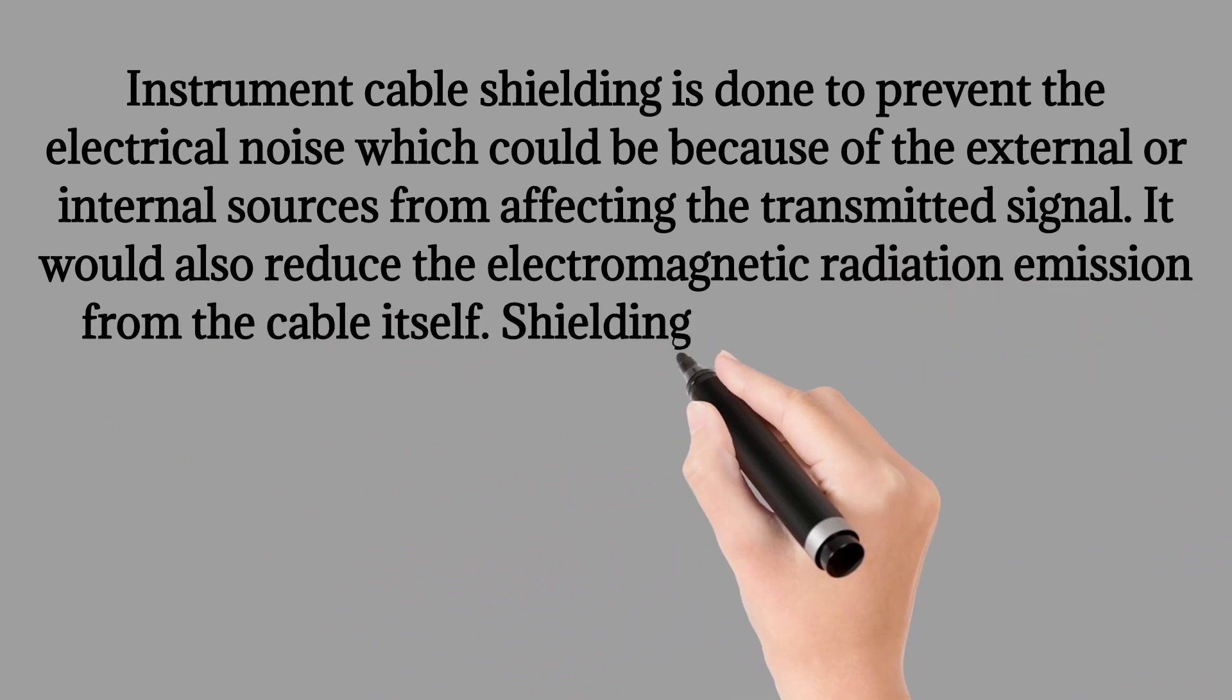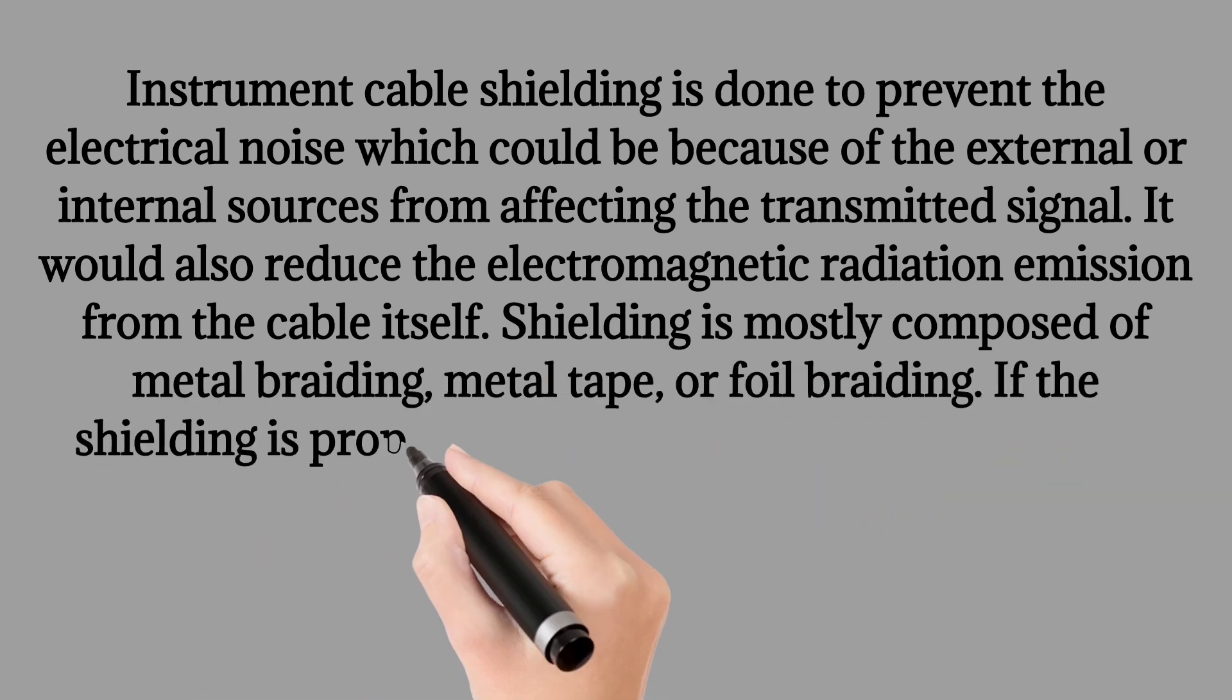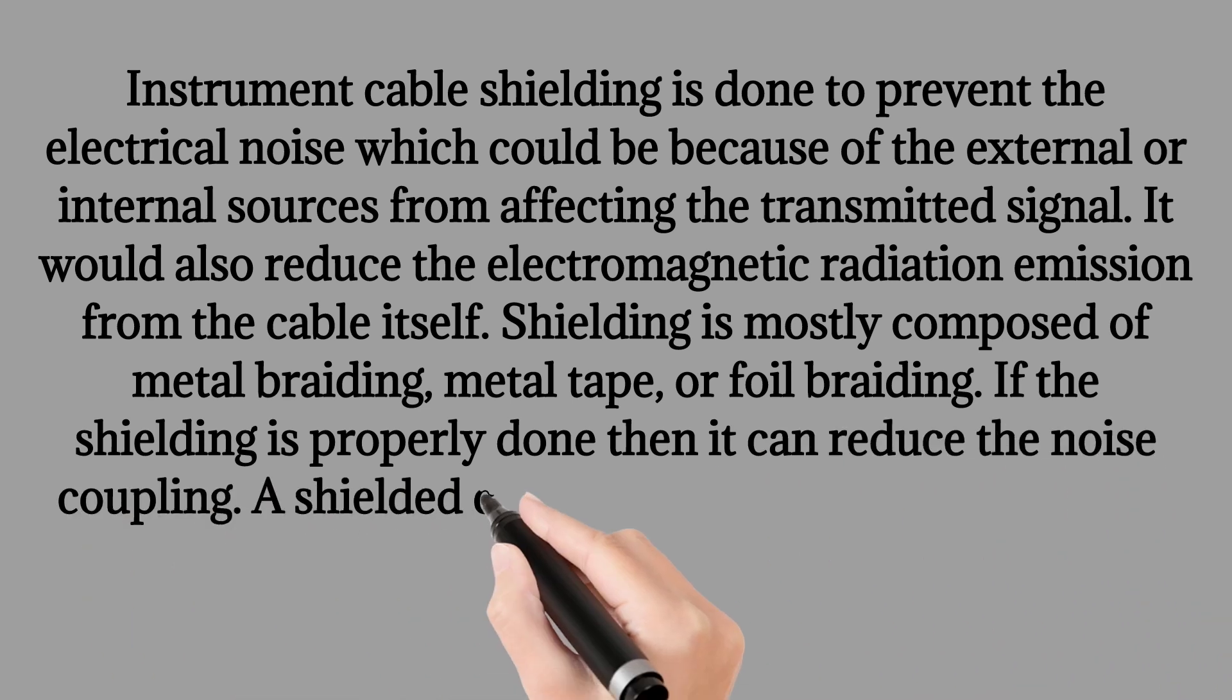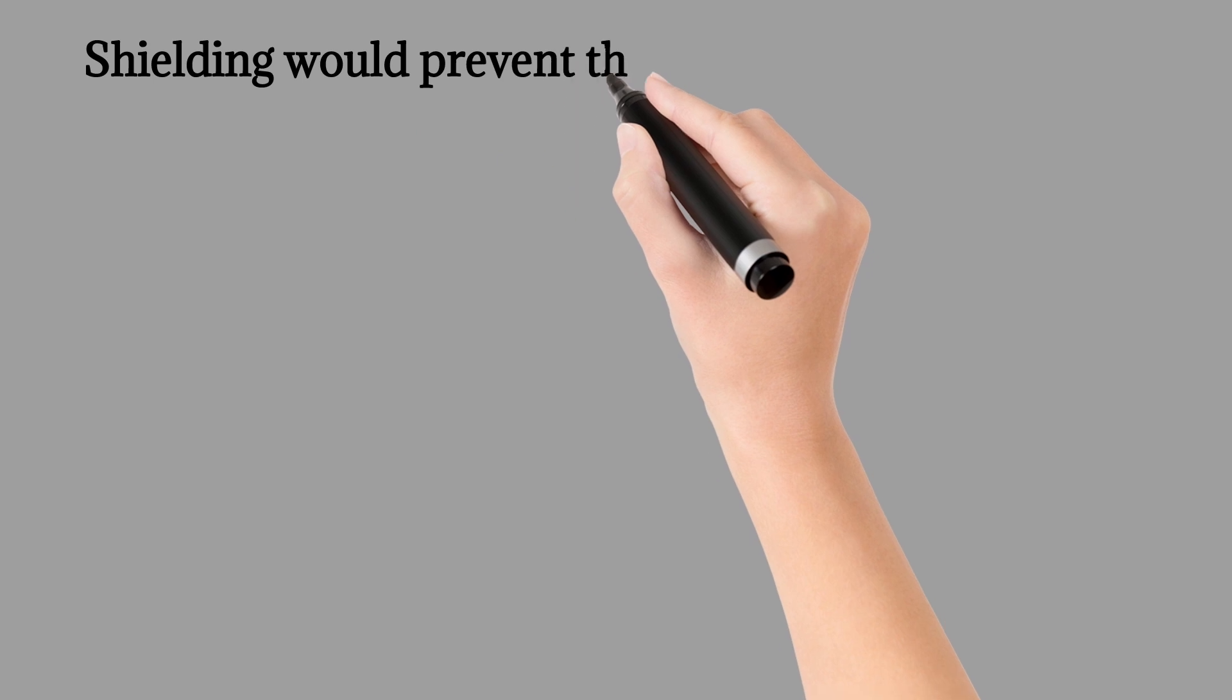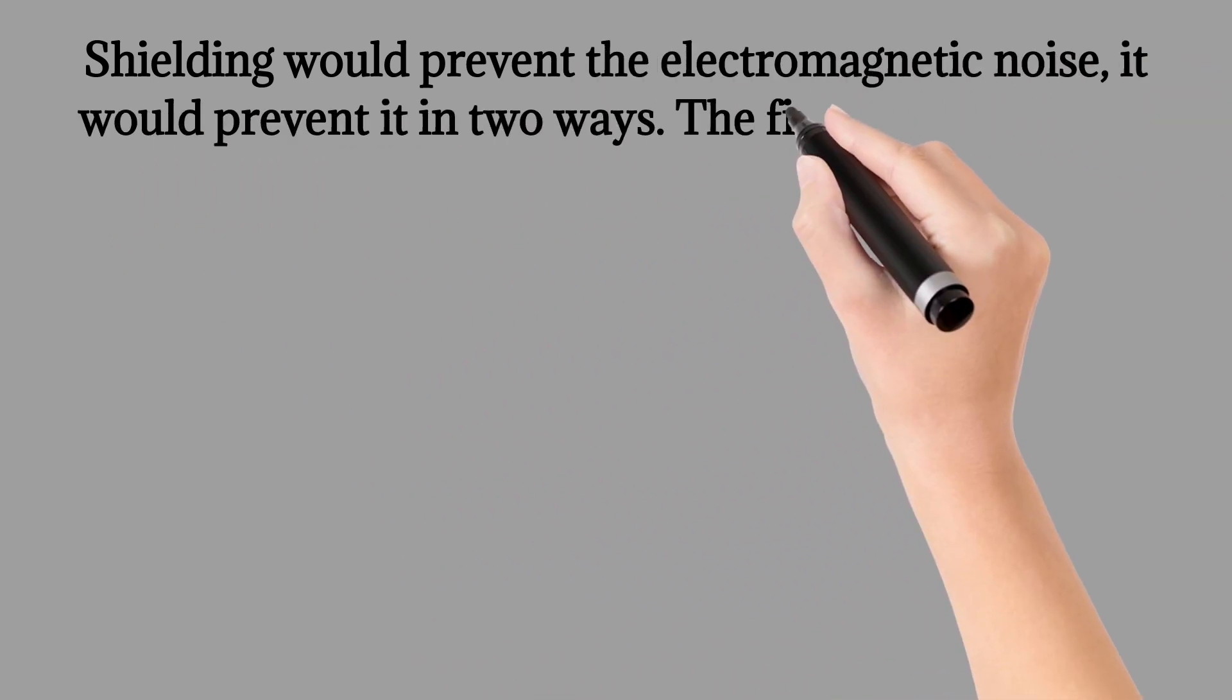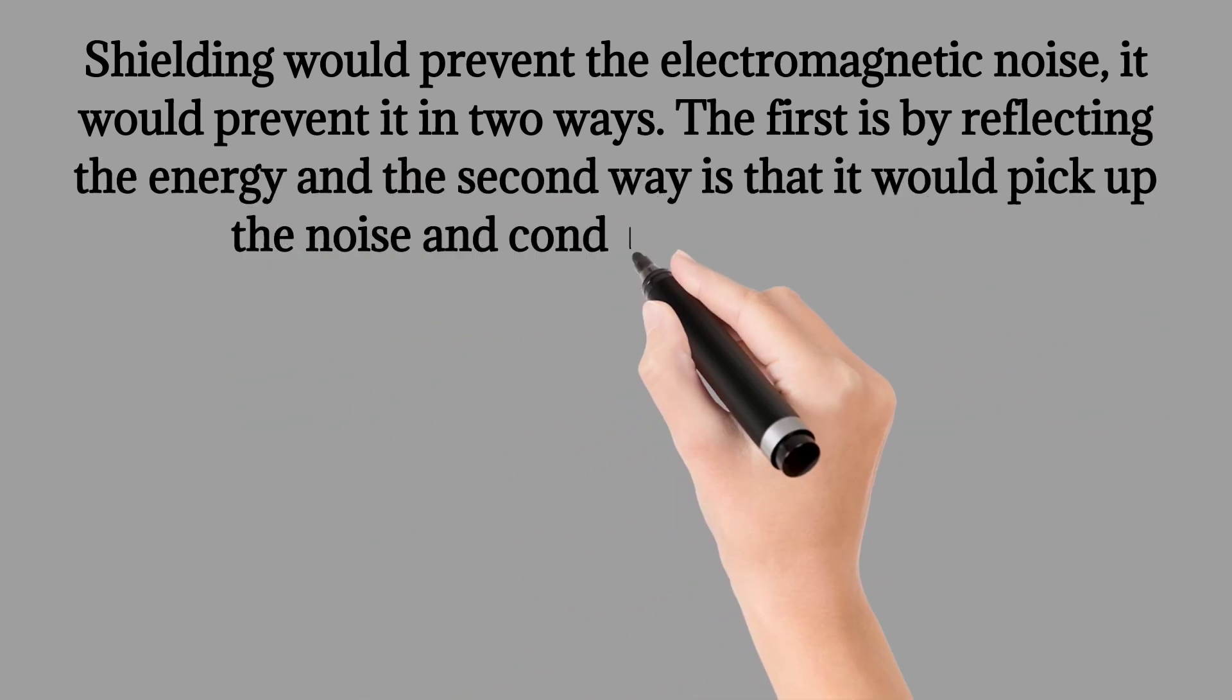Shielding is mostly composed of metal braiding, metal tape, or foil braiding. If the shielding is properly done then it can reduce the noise coupling. A shielded cable assembly could also feature a grounding wire called the drain wire. Shielding would prevent the electromagnetic noise. It would prevent it in two ways: the first is by reflecting the energy and the second way is that it would pick up the noise and conduct it to the ground.